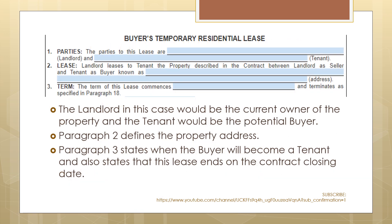Let's take a look at the form — the Buyer's Temporary Residential Lease. The parties are the landlord, who is the current owner of the property, and the tenant, who is the potential buyer. Paragraph 2 defines the property address, and paragraph 3 states when the buyer will become a tenant and also states that this lease ends on the contract closing date.